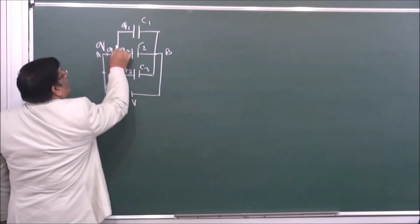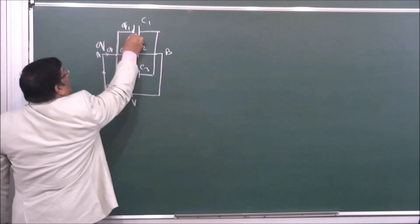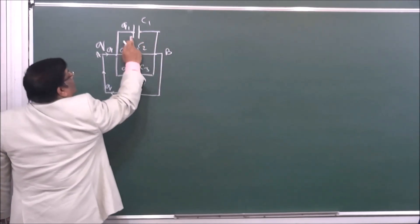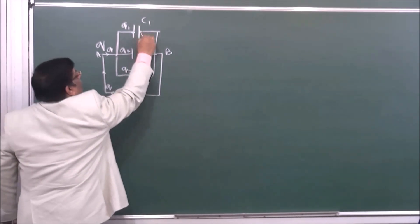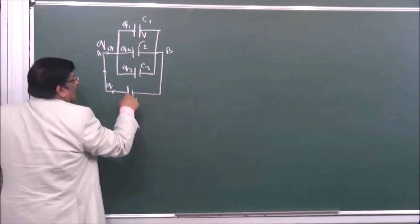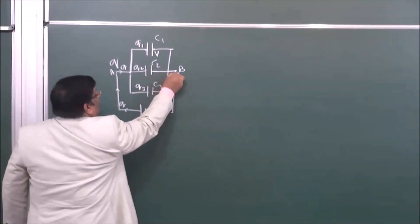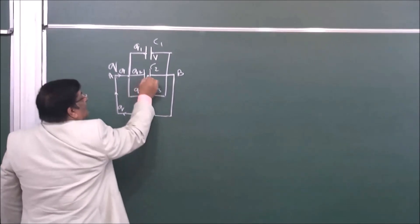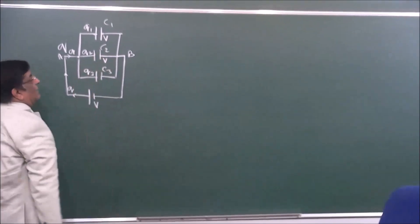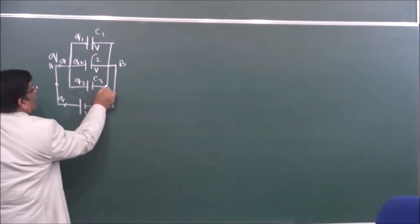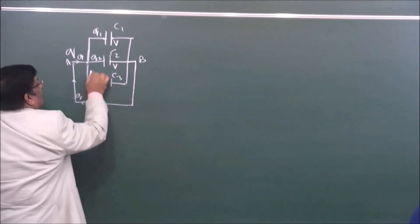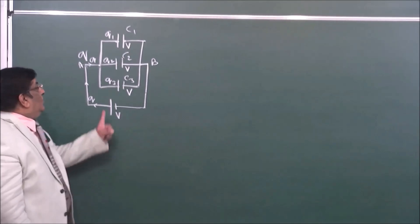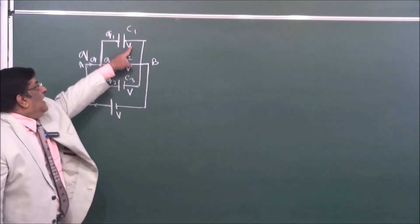This plate is connected here, and this voltage is connected here, and this voltage is connected here. So this potential difference is also V.